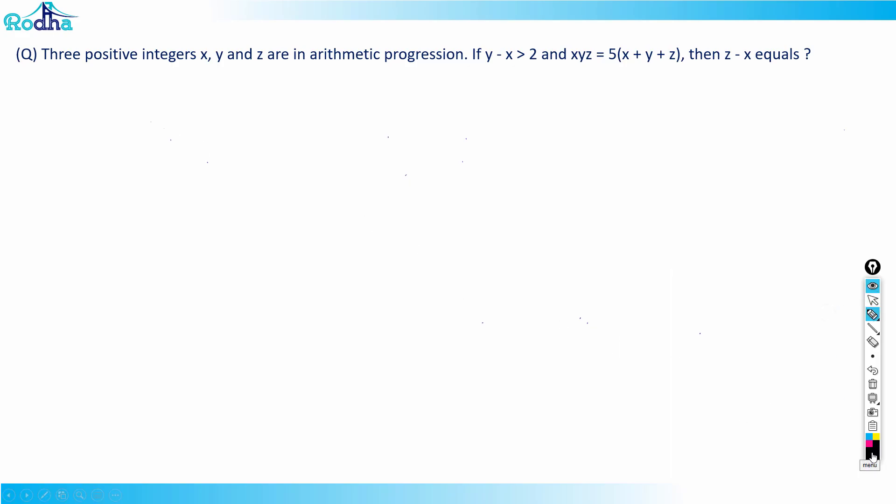Hi guys, let's look at this next question from CAT 2021 slot 2. This question is from sequence series, specifically arithmetic progression algebra. It says that three positive integers x, y, and z are in arithmetic progression, and if y minus x is greater than 2 and xyz equals 5 times (x plus y plus z).